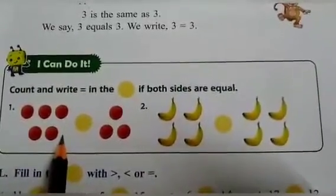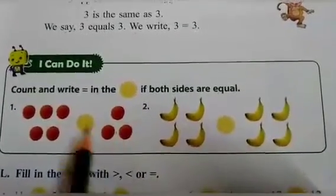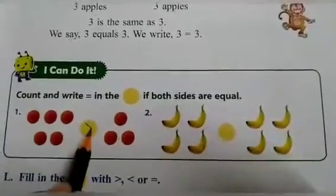One, two, three, four, five. One, two, three. They are not equal, so we will put the sign of greater than here.